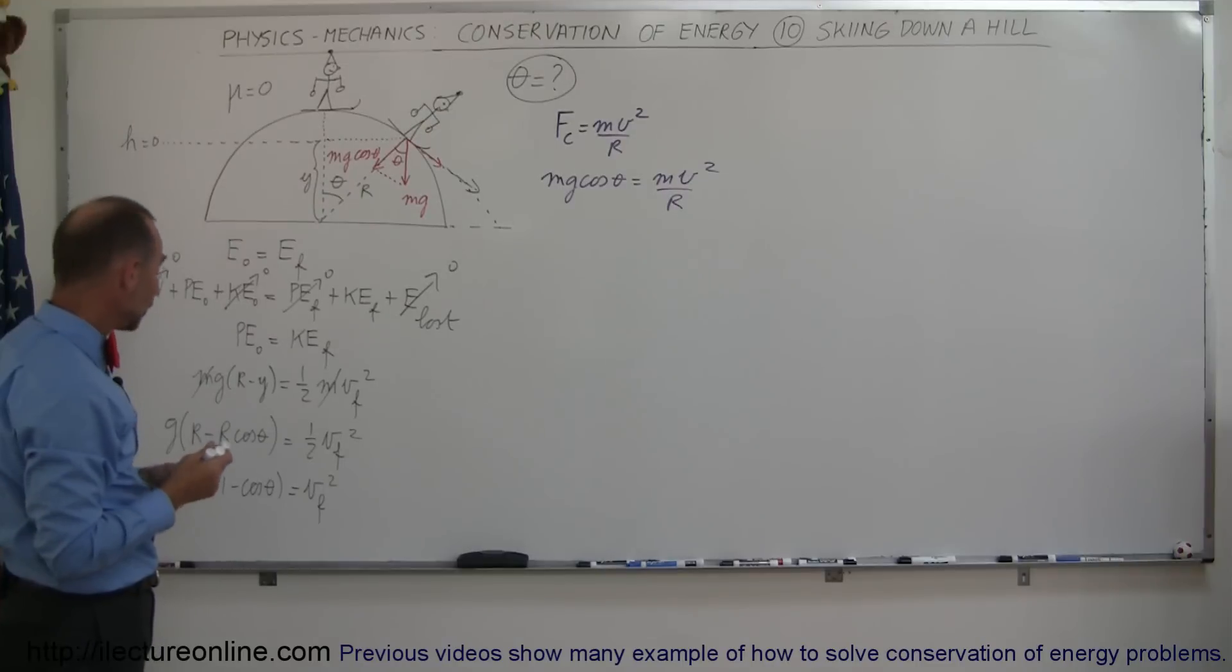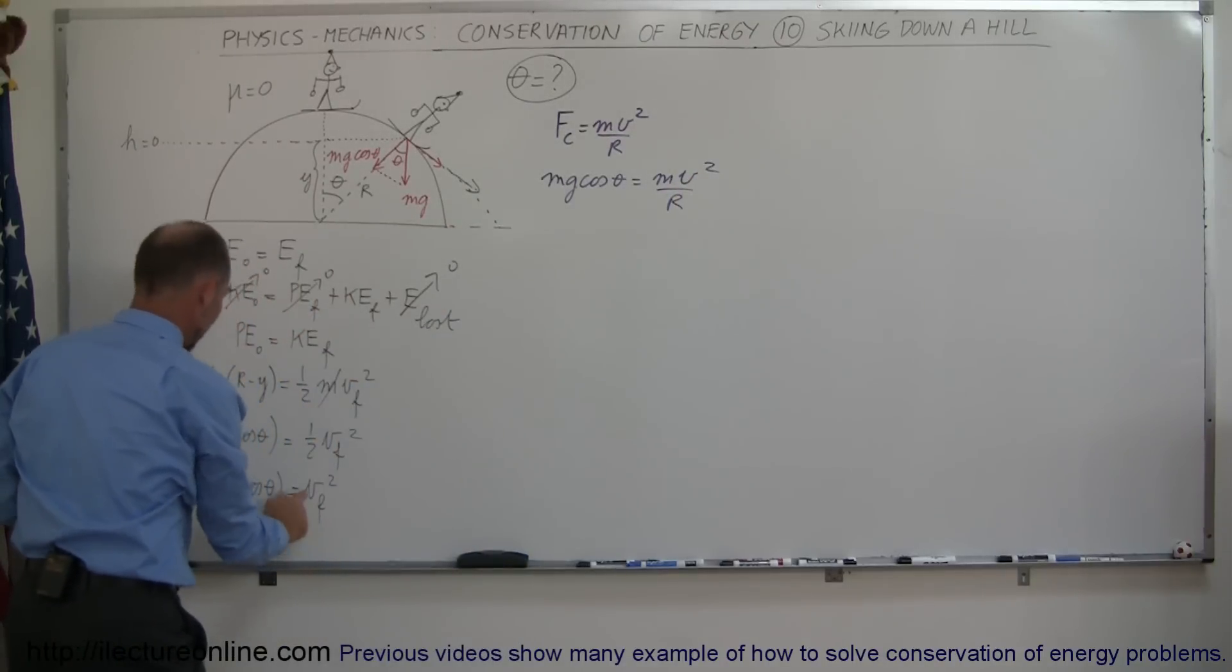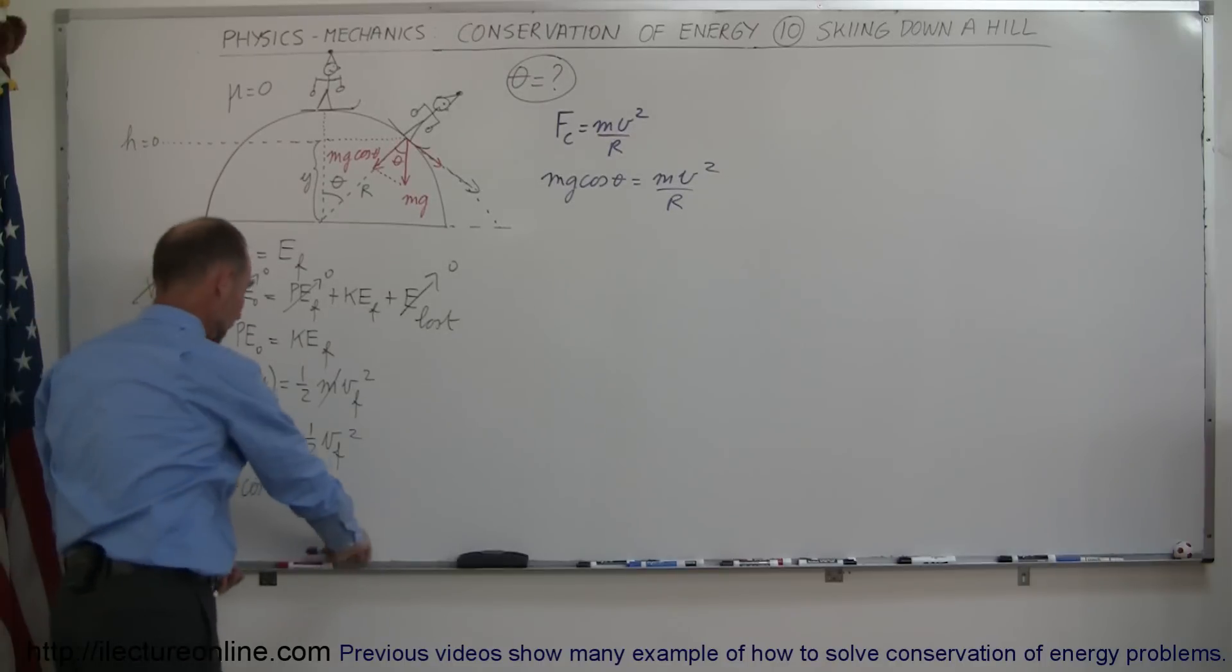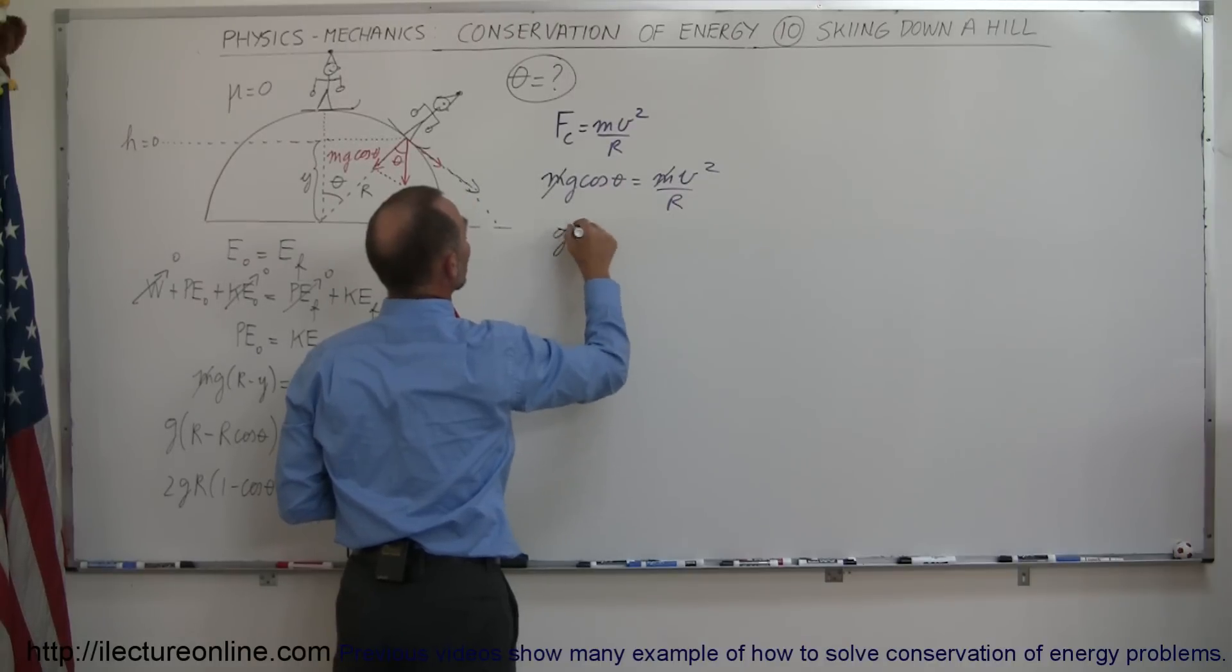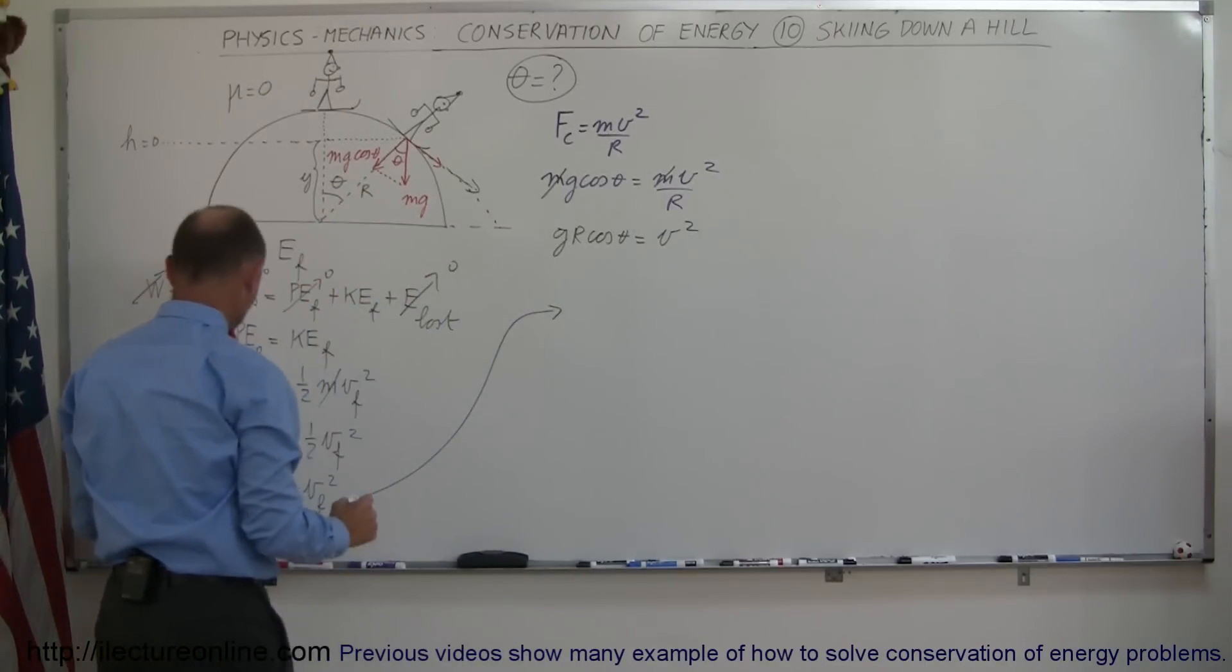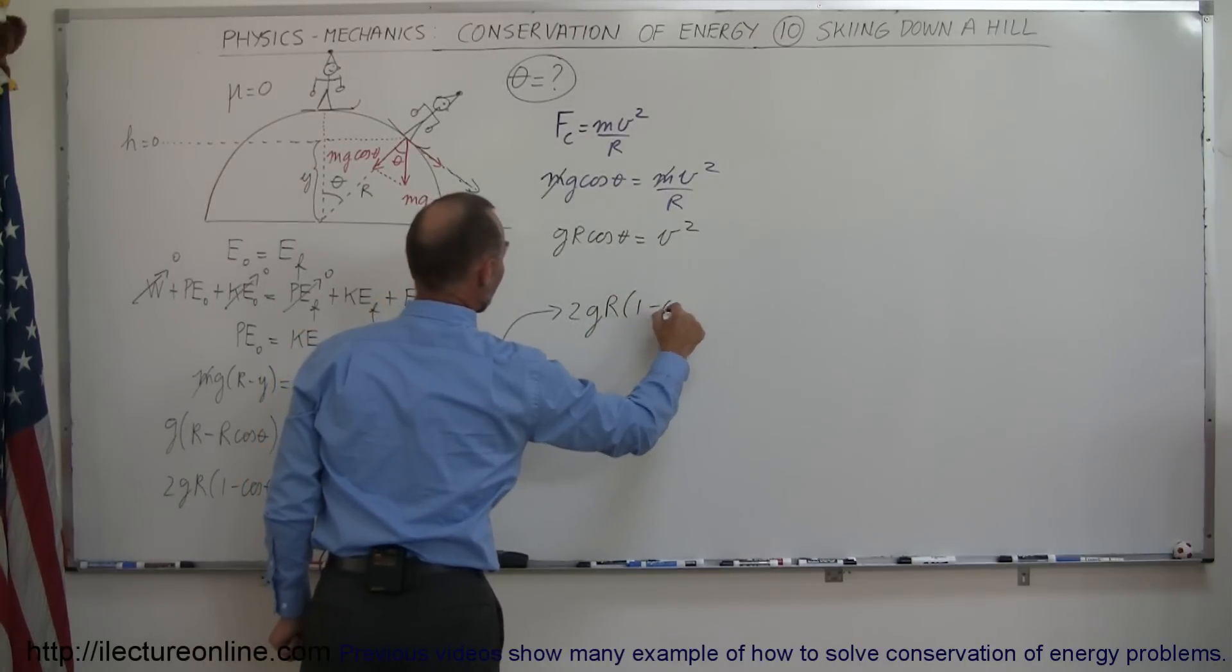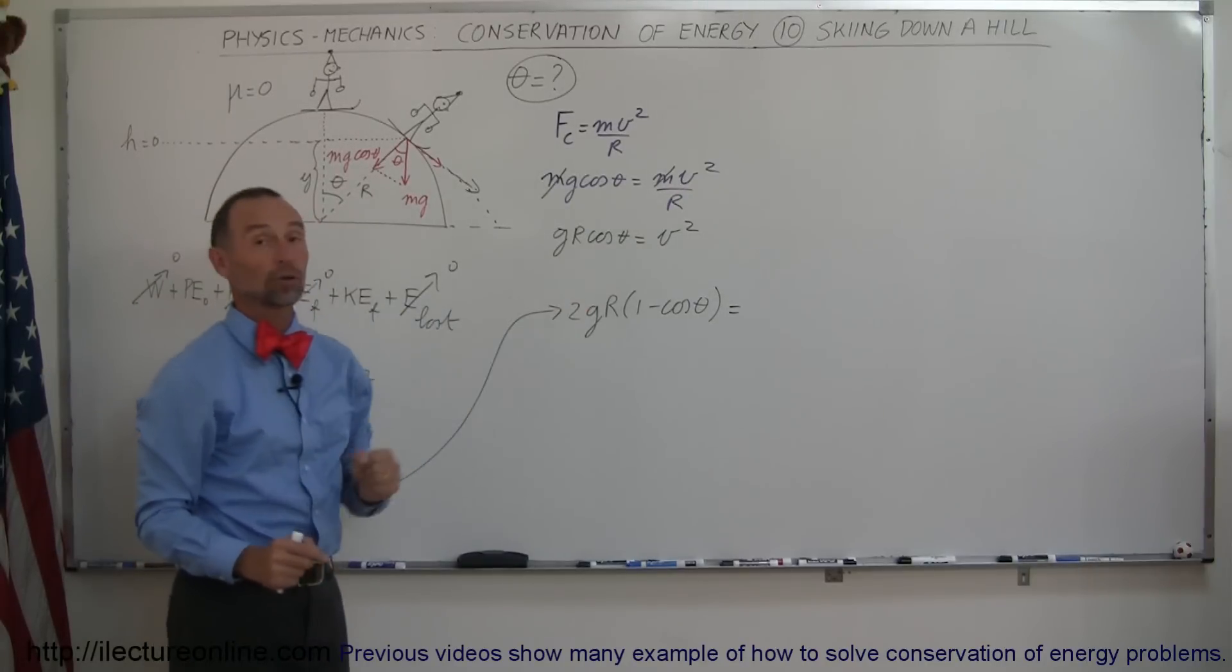Now, what we can do here now is we can then plug in the v final from this in here, and then we can solve for theta. So that's what we're going to try and do. So first of all we have an m on both sides, so that cancels out. We can move the r over here, so we have gr cosine of theta is equal to v squared, and if we then plug that in here, what we can then say is that on the left side we have 2 gr times 1 minus the cosine of theta, and on the right side instead of writing v final squared, we write it, we write gr cosine theta.